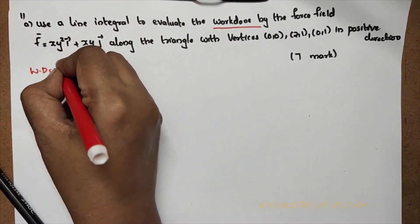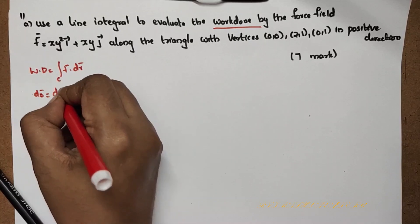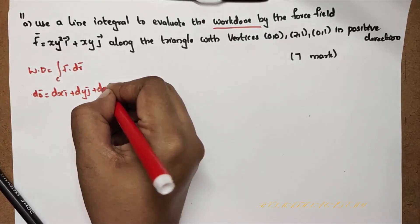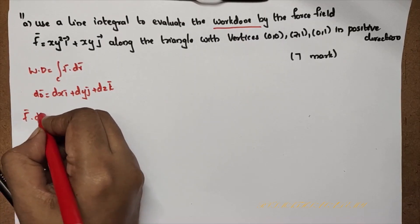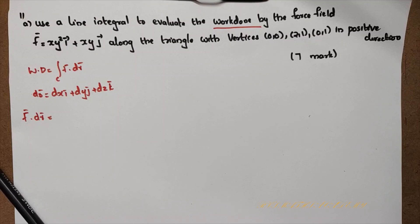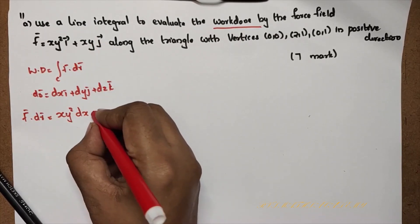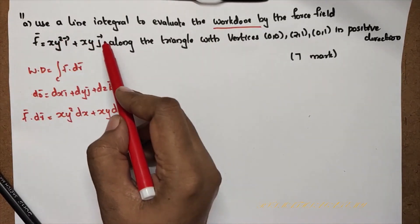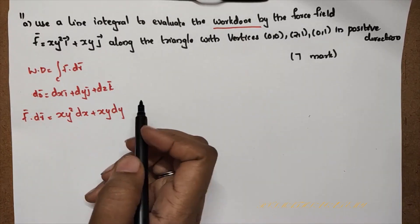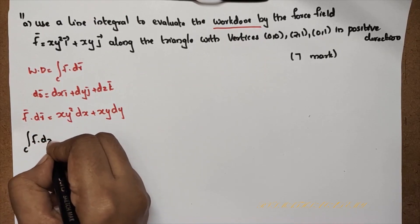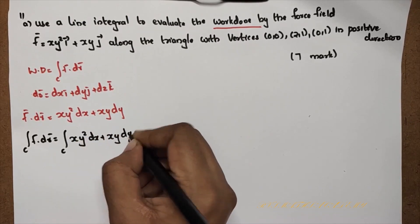Work done is equal to integral over C of F dot dr. Here, dr is equal to dx i plus dy j plus dz k. So the integral becomes: integral over C of xy² dx plus xy dy.